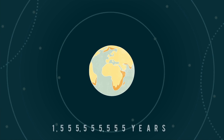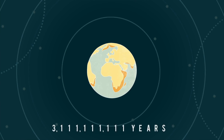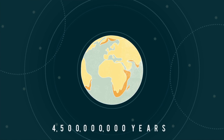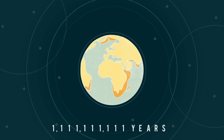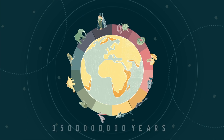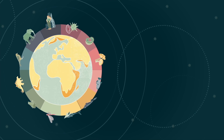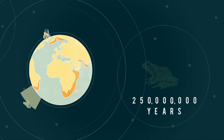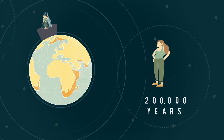This is our Earth, four and a half billion years old. It has been supporting life for the last three and a half billion years. Frogs appeared 250 million years ago, whilst modern humans have only been here for the last 200,000 years.